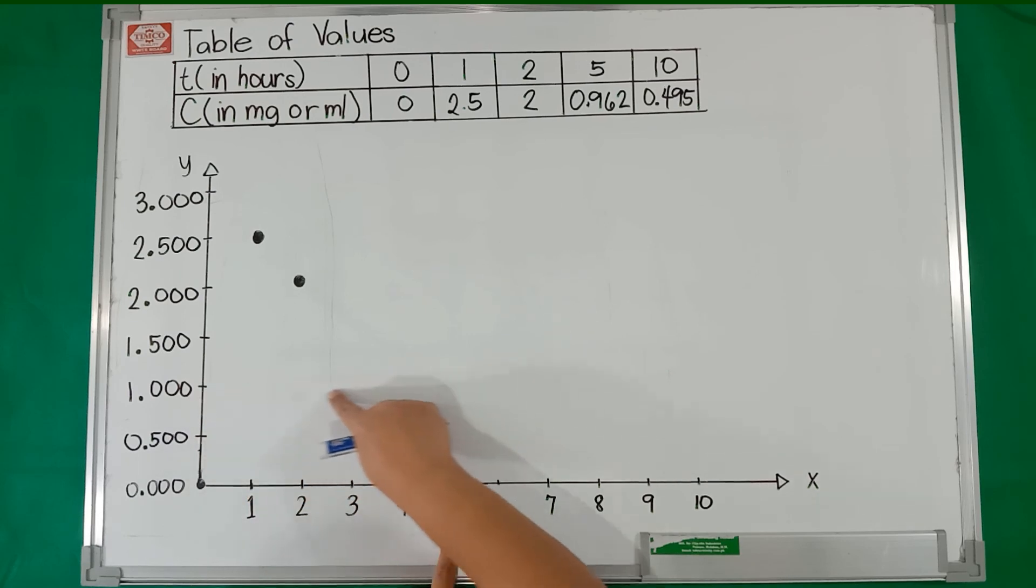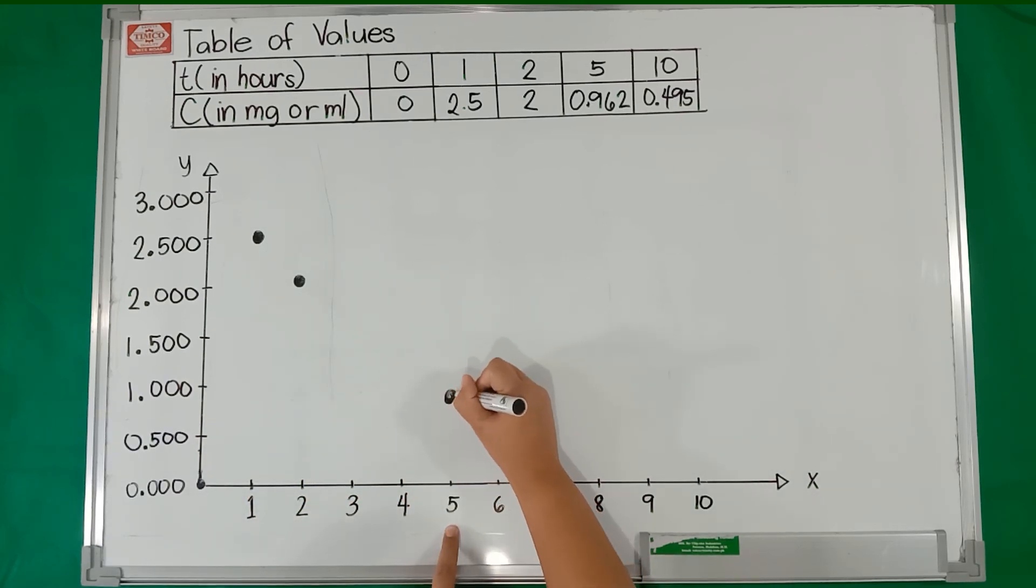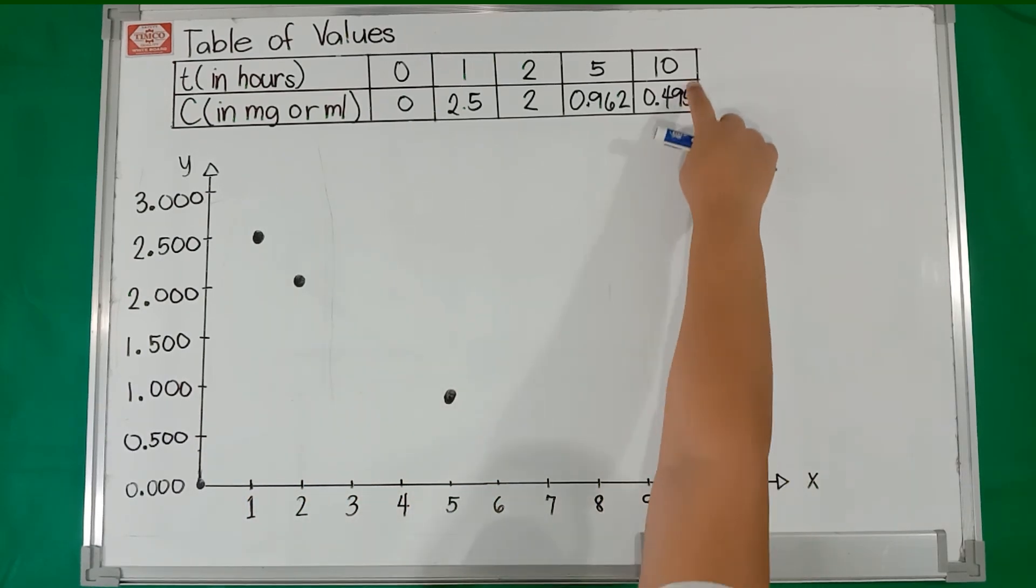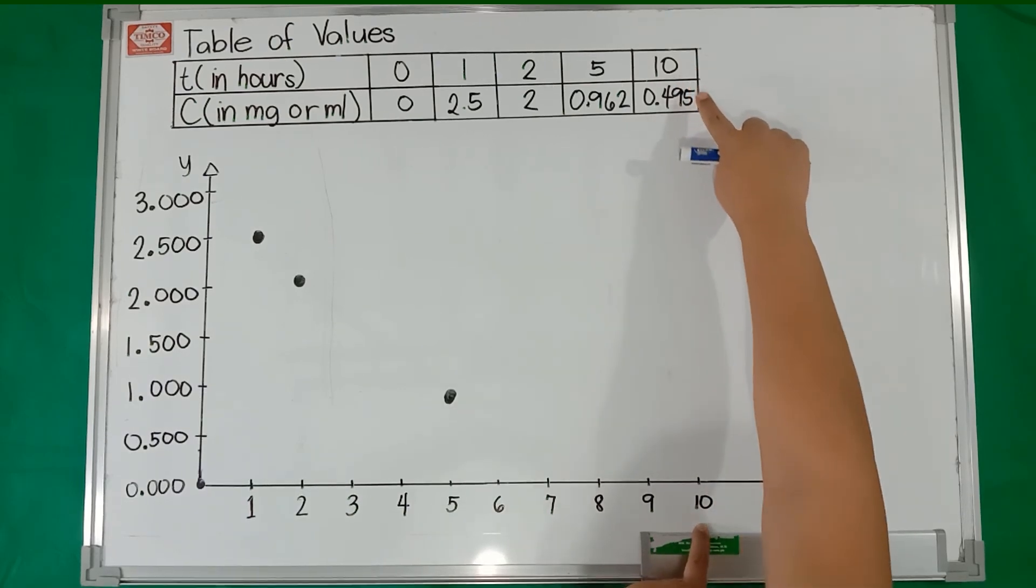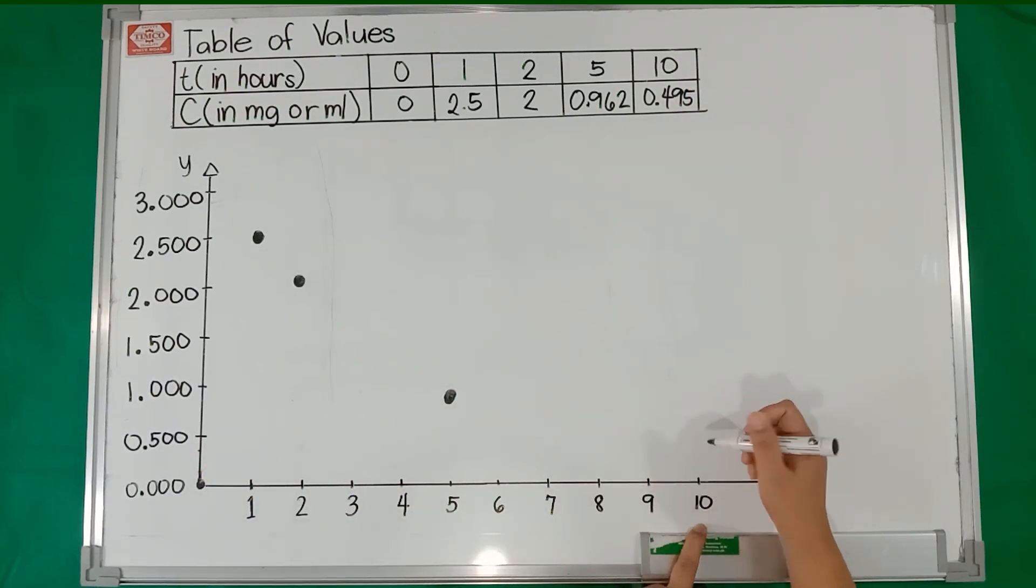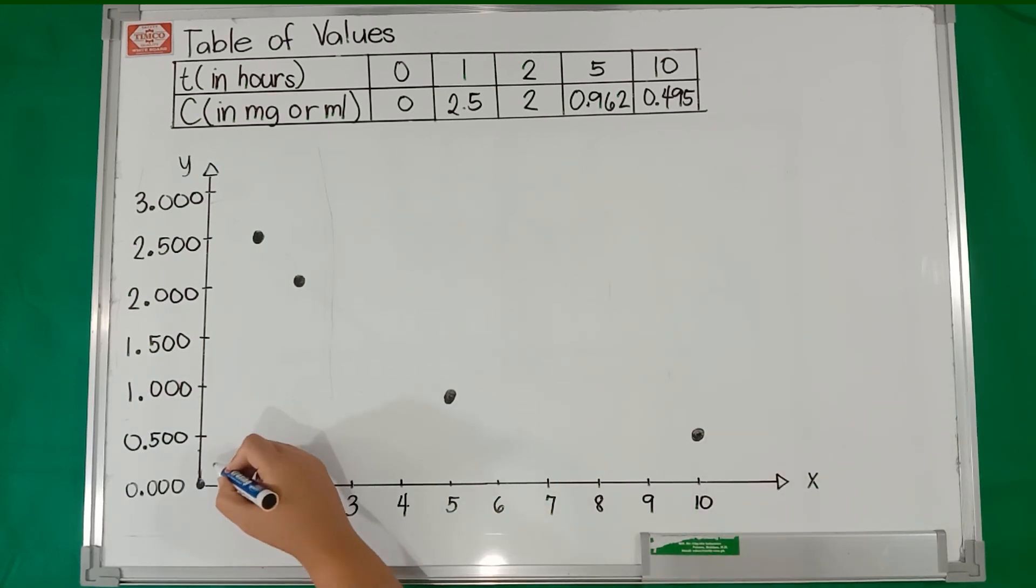After 5 hours, we have 0.962 mg or milliliters. And after 10 hours, we have 0.495 mg or milliliters. Now, sketching the graph, we have...